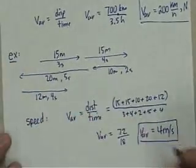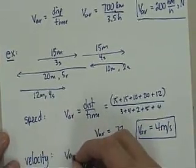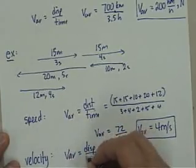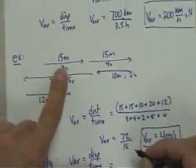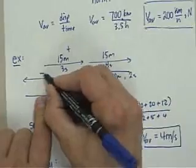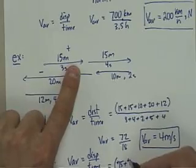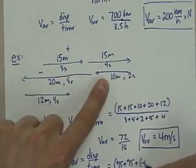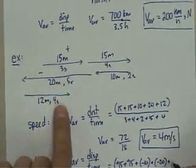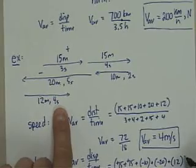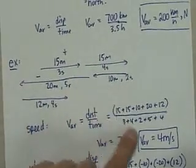Now if we were going to be finding velocity, well that's a little different now. Same formula. Except we're using displacement time. So that's going to end up equaling, now we have to keep our directions, and remember right is going to be positive, left is going to be negative. So I'm going to go positive 15 plus positive 15 plus negative 10 plus negative 20 plus positive 12. And that's going to be all over top of the same time frame because time doesn't change directions, it's just always the same thing.